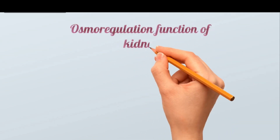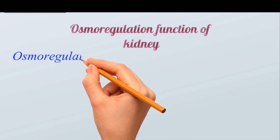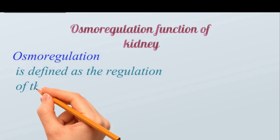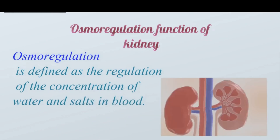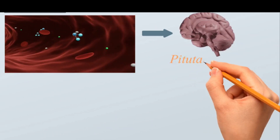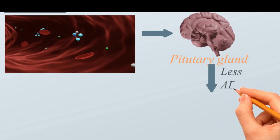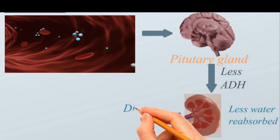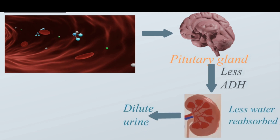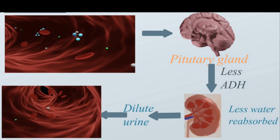Osmoregulation is defined as the regulation of the concentration of water and salts in blood. The kidneys play an important role in osmoregulation by regulating the water content in blood. When there is excess water in blood, the brain detects this and the pituitary gland releases less ADH, which causes the kidney tubules to become less permeable to water, so less water is reabsorbed. Dilute urine is produced, which brings down the volume of water in blood to normal.